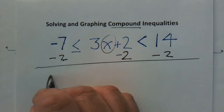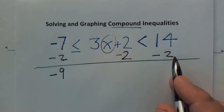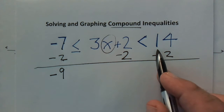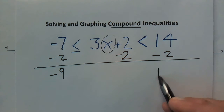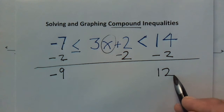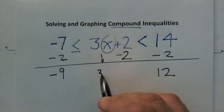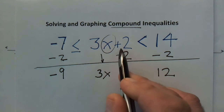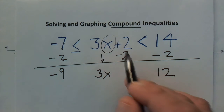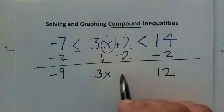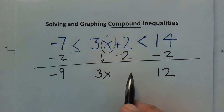On the right side, 14 minus 2 leaves us with 12. In the middle, I bring down the 3x since we didn't do anything to it. Then 2 minus 2 is 0, so the plus 2 is eliminated — that was the whole reason we subtracted 2. You can write plus 0 if it helps you remember, but really we just move forward with 3x in the middle.